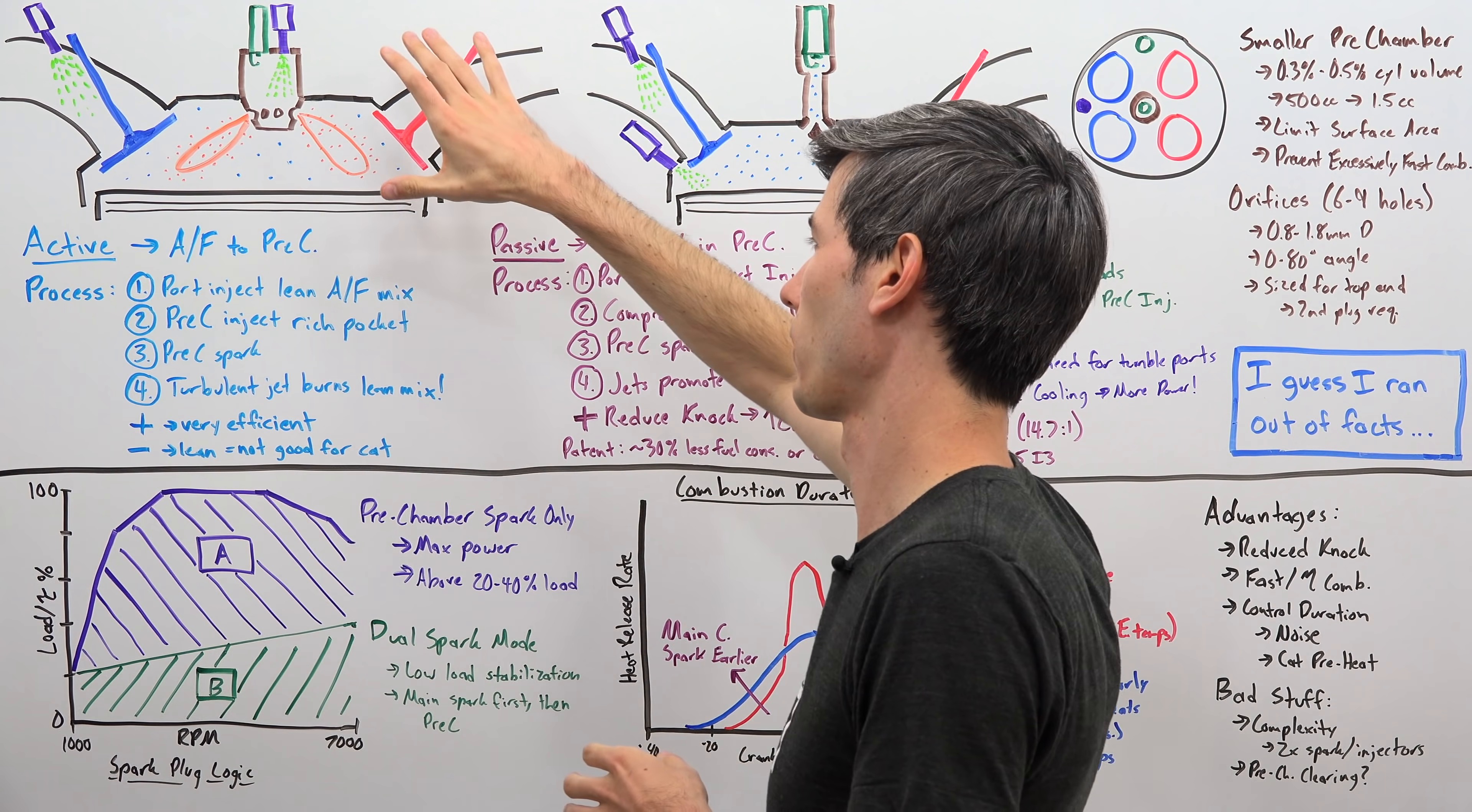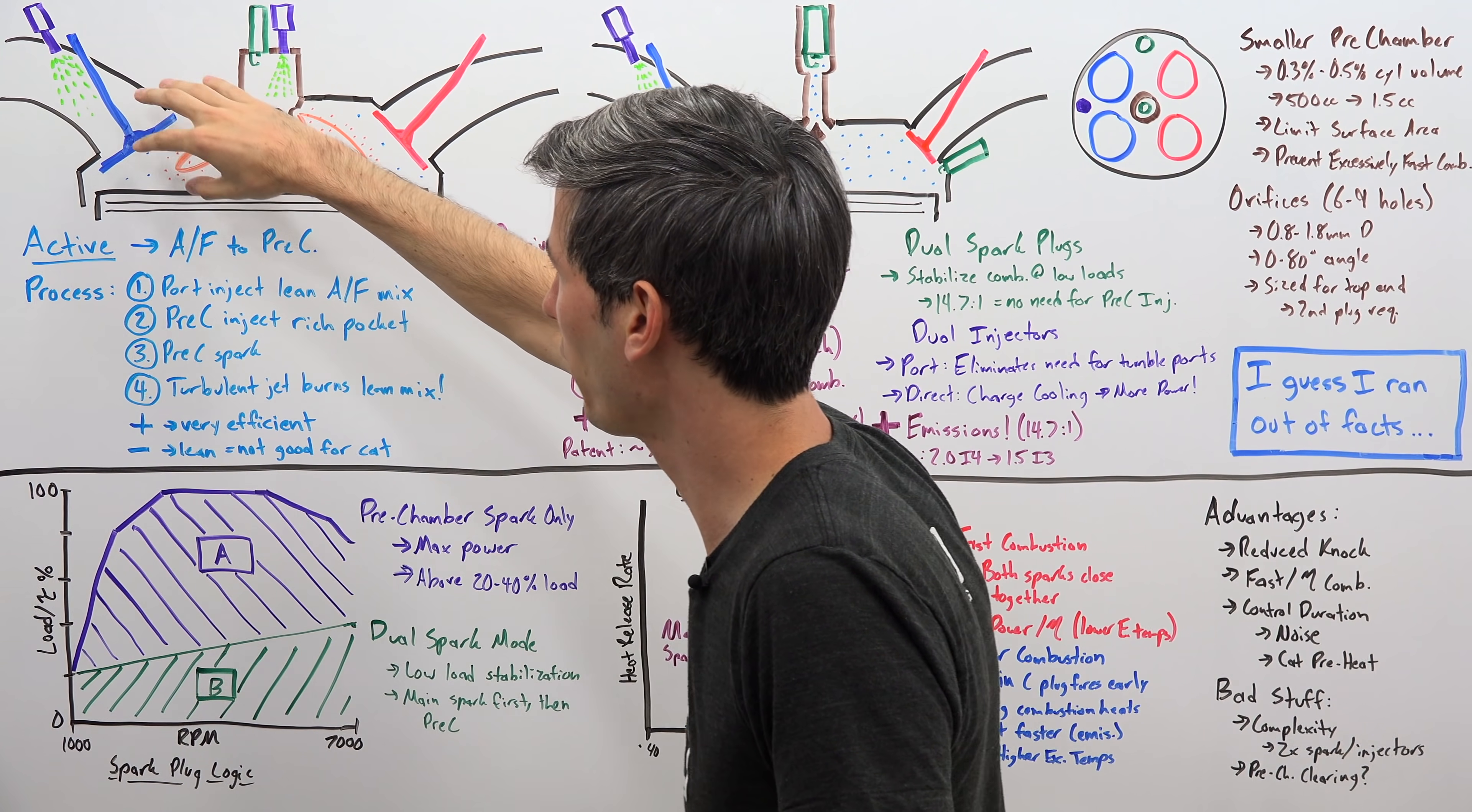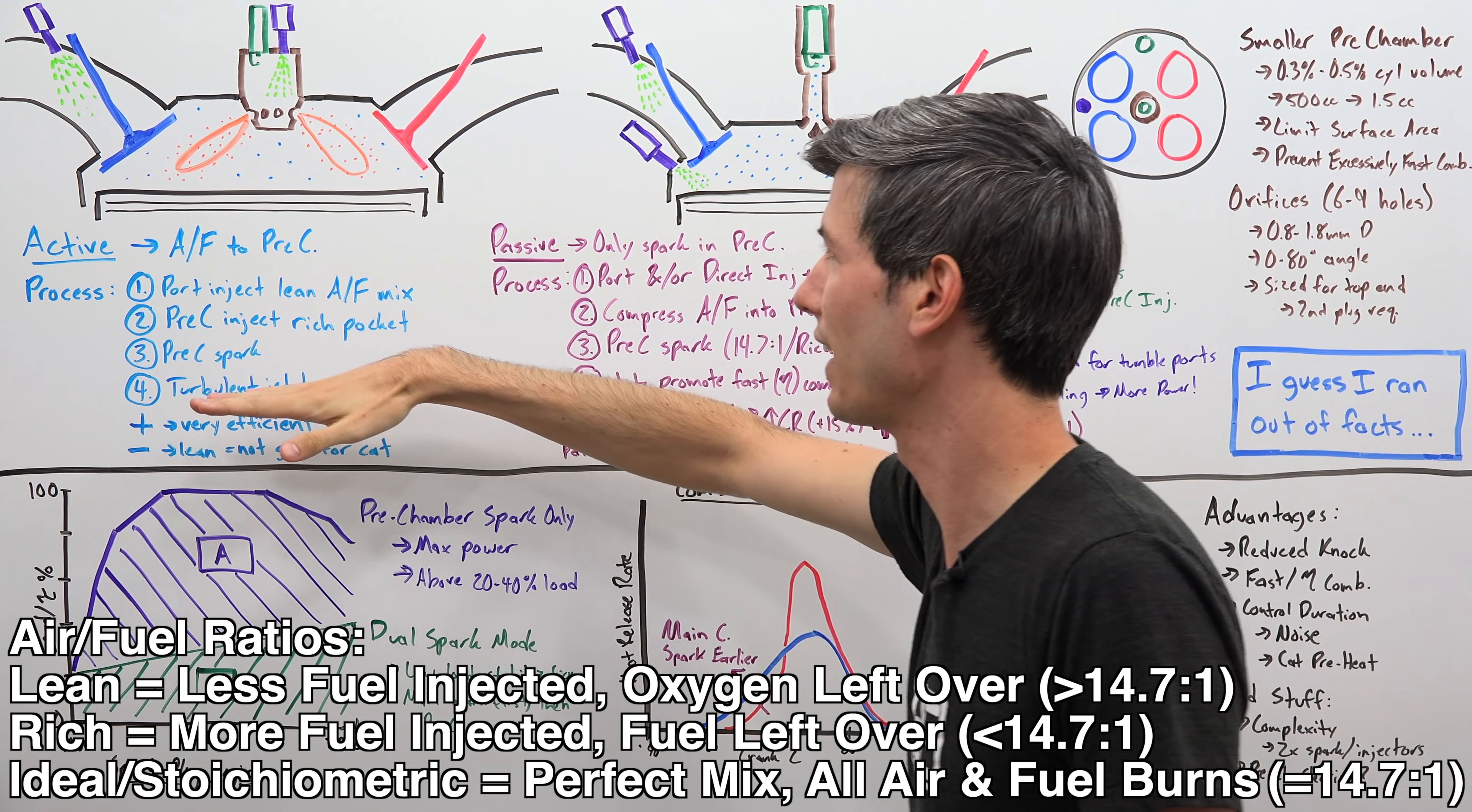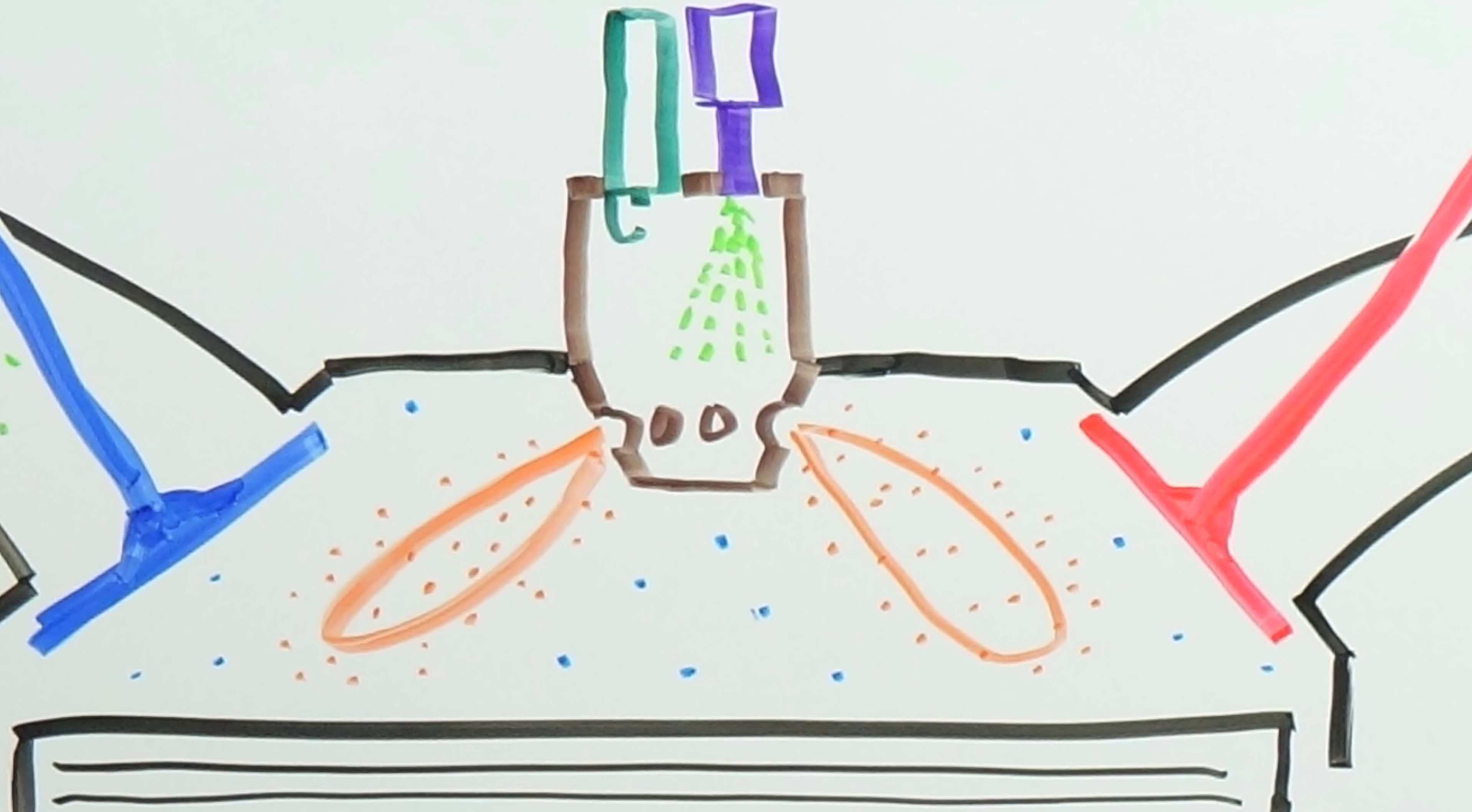So how do these active systems work? Well, the process is as follows. You have two fuel injectors, one for the pre-chamber and one in your intake port, and what this initial fuel injector is doing is getting in a very lean air-fuel mixture, so super lean, otherwise it wouldn't be combustible in a typical combustion engine. A very lean air-fuel mixture that's coming in during that intake stroke. And then you're going to pull in that air and fuel, compress that air and fuel with the piston, and then you have a separate injector which is going to spray fuel directly into this pre-ignition chamber.